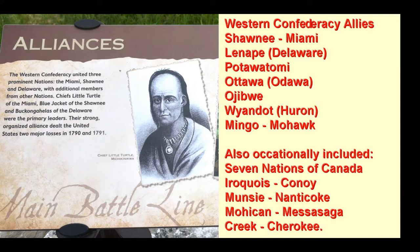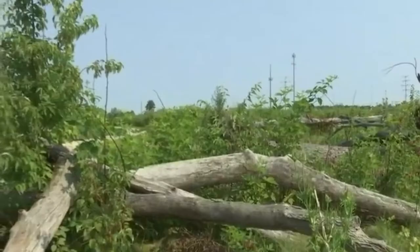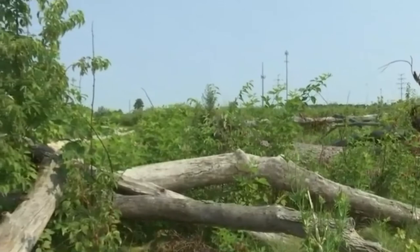These are the American Indian tribal allies and some of their leaders — Little Turtle and Blue Jacket are some of the better-known ones. These are some of the leading U.S. figures, including a future president.